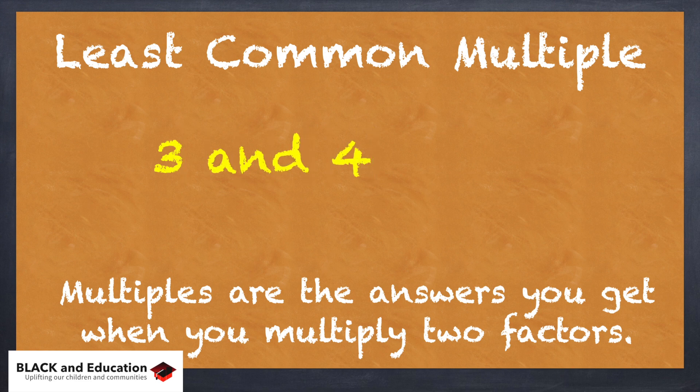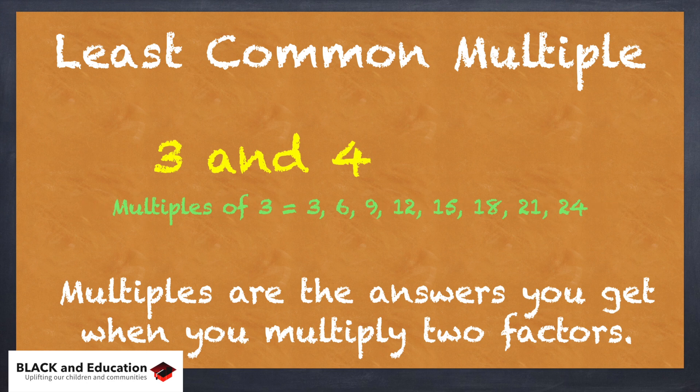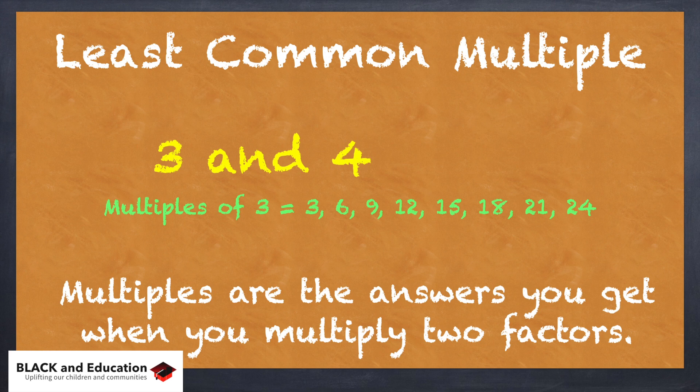So let's look at 3 and 4. We want to find a common multiple of 3 and 4, the least common multiple. So if I look at multiples of 3, I know that I have 3 times 1 is equal to 3, 3 times 2 is equal to 6, and so on.